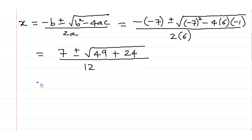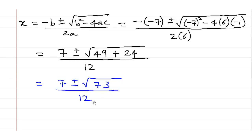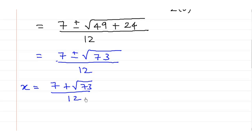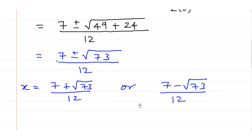This simplifies to 7 ± √73, the whole upon 12. So we have the two answers directly: either x = (7 + √73) / 12, or x = (7 - √73) / 12.